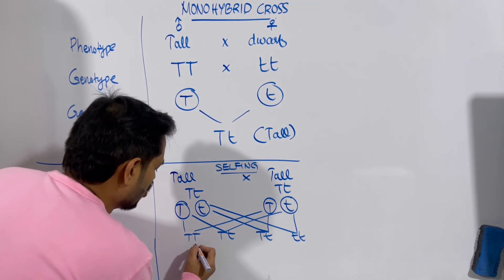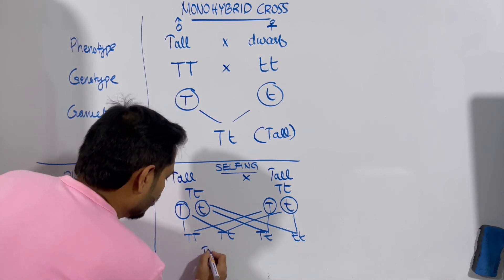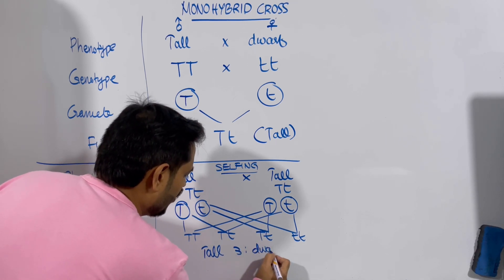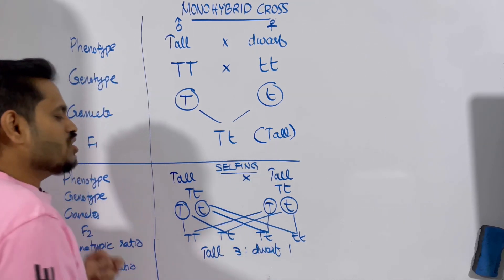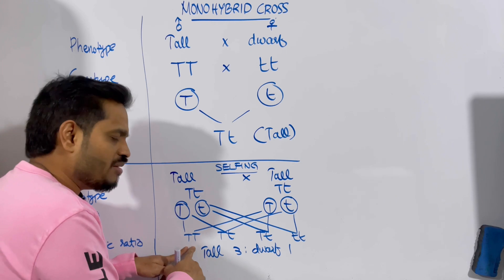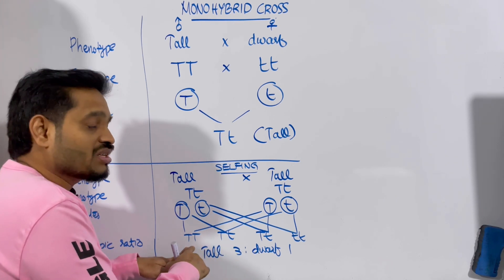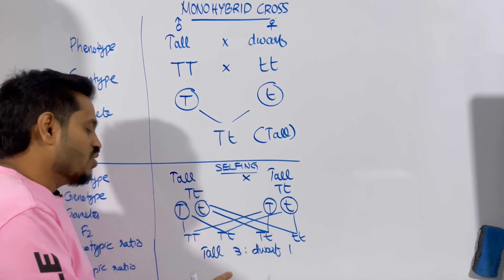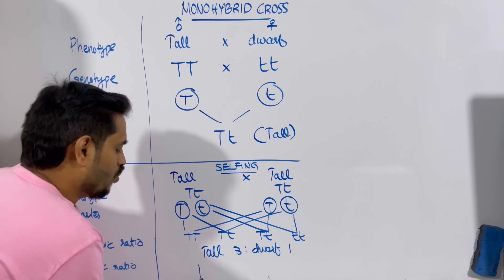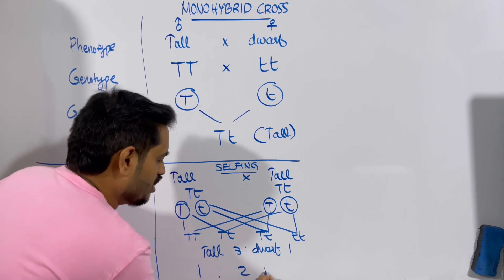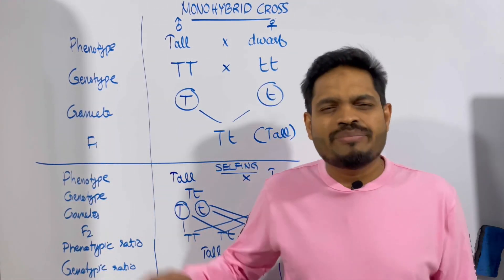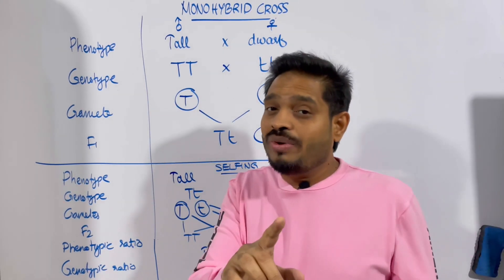This is called homozygous tall, these both are called heterozygous tall, and this is called homozygous dwarf. Now let us write the phenotypic ratio. This is tall, this is tall, and this is tall. So we get tall—how many? Three. To dwarf—how many we have? Only one. So three is to one ratio we are getting for phenotype. But are they the same tall? No. This one, both letters are same; here both are different. So this one—same one—is called homozygous tall, and different one is called heterozygous tall, or pure tall and impure tall. So we get a genotypic ratio of homozygous tall one, to heterozygous tall two, to homozygous dwarf one. That is the genotypic ratio. And that's all—the simplest understanding of monohybrid cross.